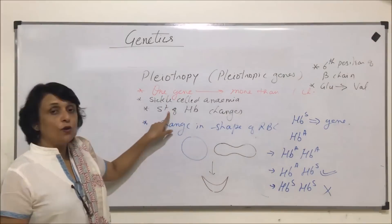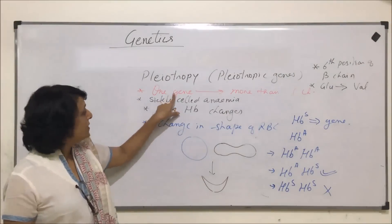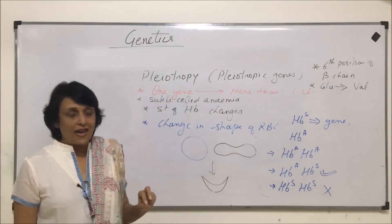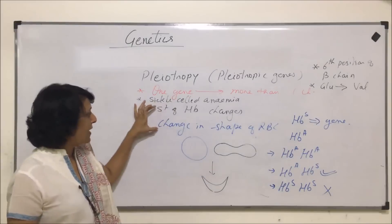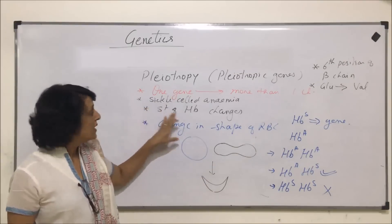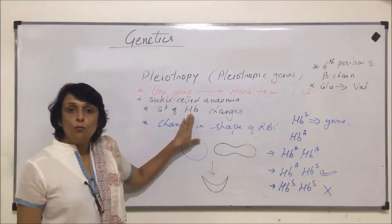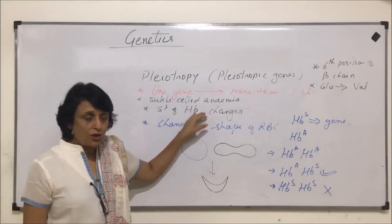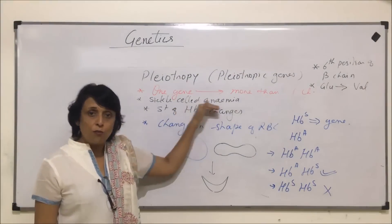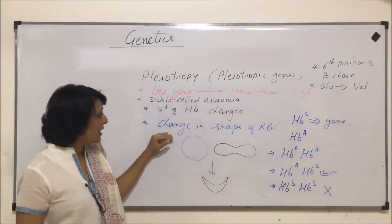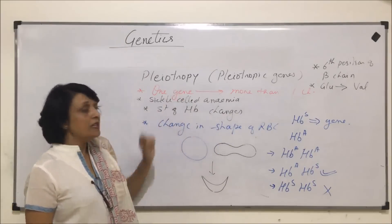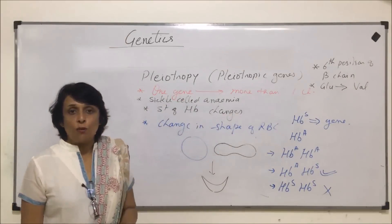Here we were talking about one gene controlling more than one character. The two characters controlled by this gene are the molecular structure of hemoglobin and the shape of RBC. This is pleiotropy.